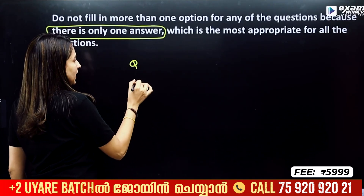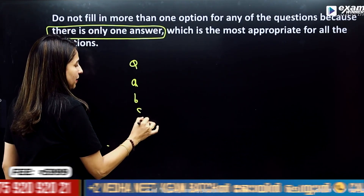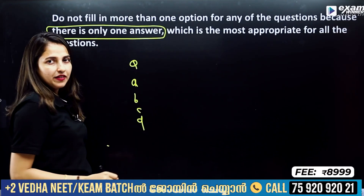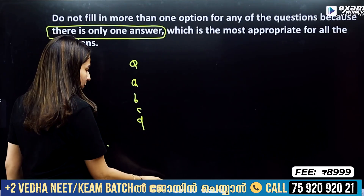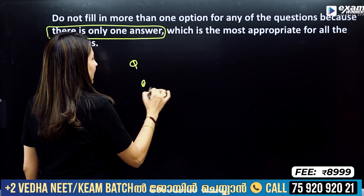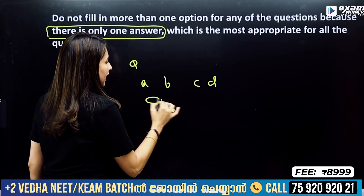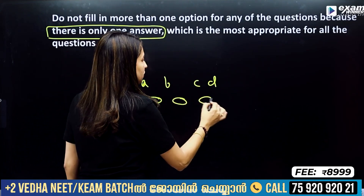Each question gives you 4 options: A, B, C, D. You can identify the correct option in the question and fill it in the corresponding bubble on the OMR sheet. You write your answer by filling in the bubble corresponding to A, B, C, or D.